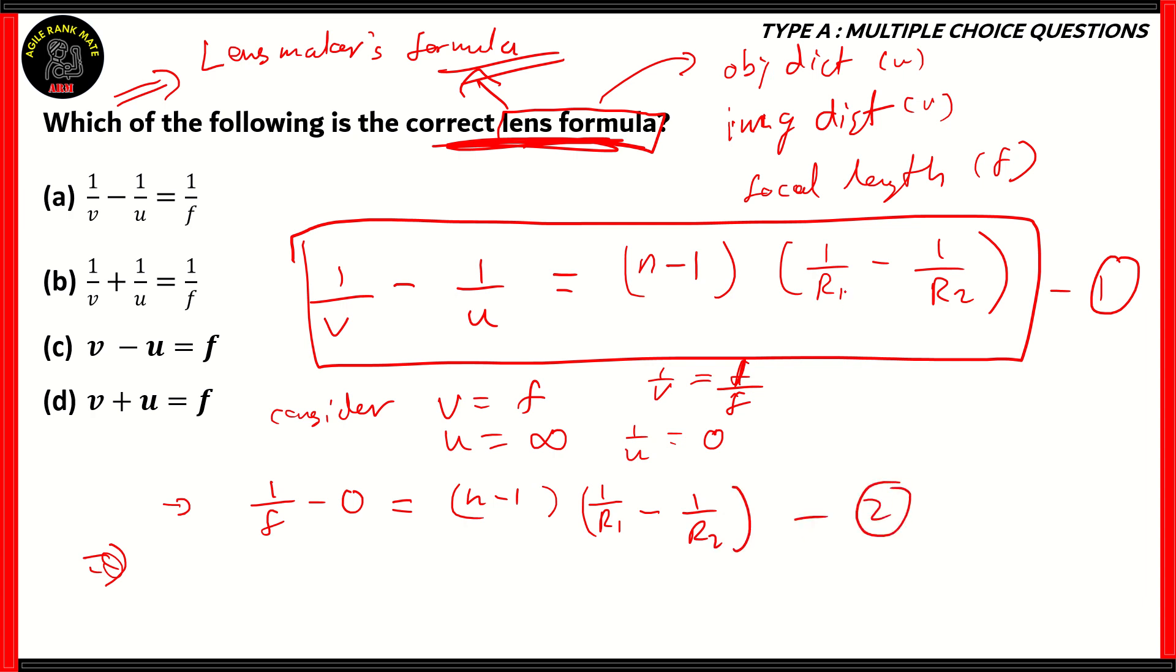Now, if you notice, the RHS for equations 1 and 2 are the same. So, equate LHS. And the final answer that we're getting is 1/V - 1/U = 1/F. So, the lens formula is the formula that relates the focal length to the object distance and the image distance. And this is the correct form of the lens formula.